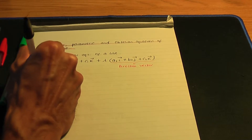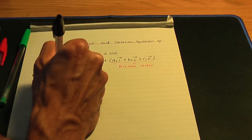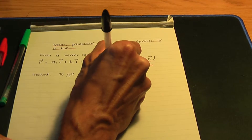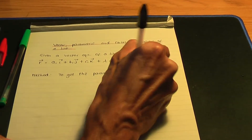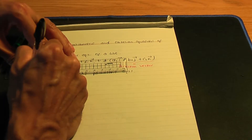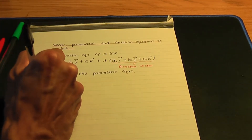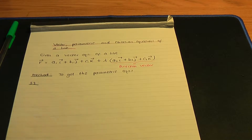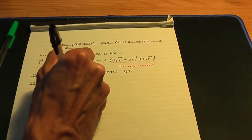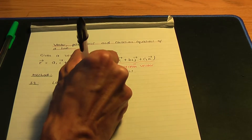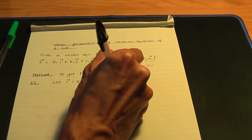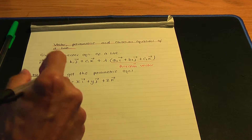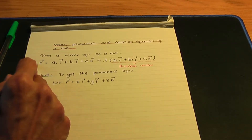Here's the method to get the parametric equations. Step one: remember, r is the position vector of any point on your line. So I'm going to let r equal xi plus yj plus zk. And what I'm going to do with that is put r into the vector equation of the line — let's call that equation star.